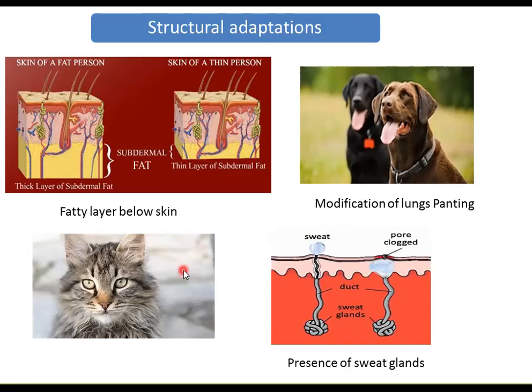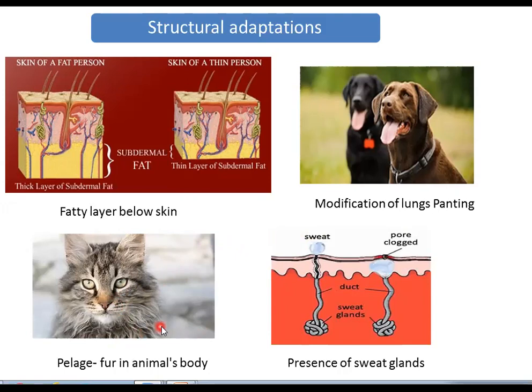The third structural adaptation is pelage — spelled P-E-L-A-G-E. Pelage refers to the presence of hair or fur on the body surface of various animals. It also helps in regulating heat exchange, and this is a structural change.